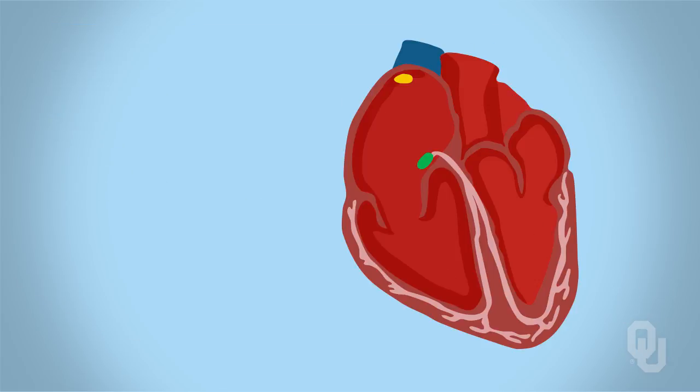We are going to start at the SA node. Located within the SA node are the pacemaker cells. Keep in mind that pacemaker cells are located throughout the conduction system. However, we are going to begin with the SA node because that's how it happens in a normal, healthy heart. The pacemaker cells in the SA node are going to be generating action potentials. Remember that these are called pacemaker potentials or pacemaker action potentials, and this all starts in the SA node.